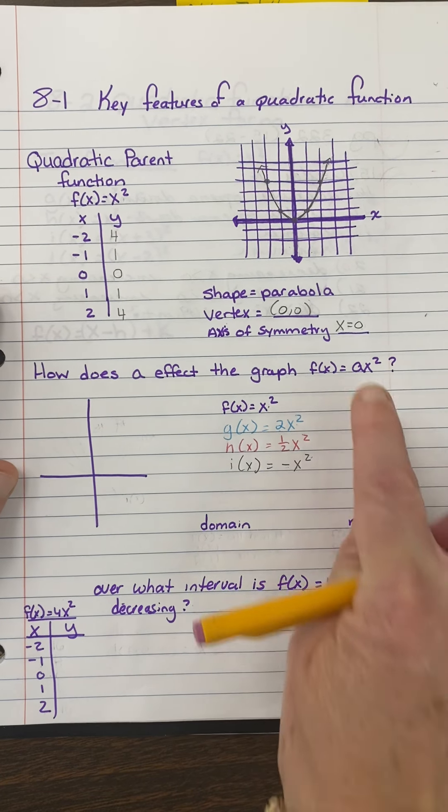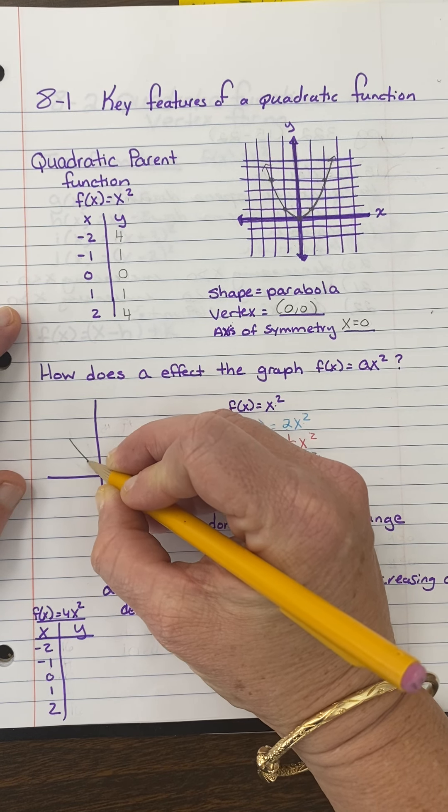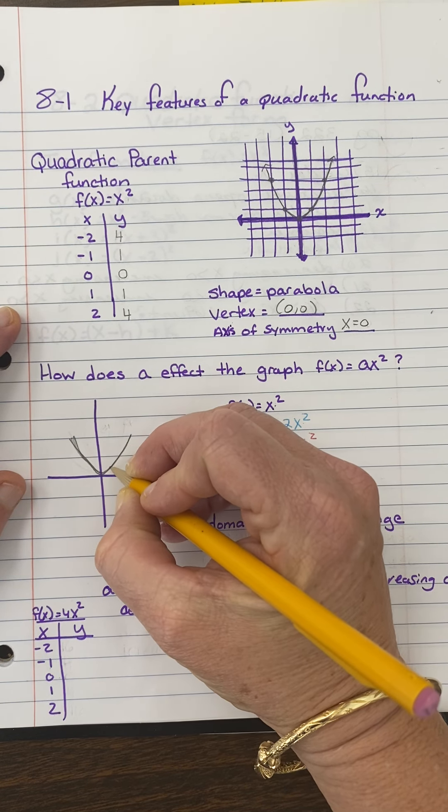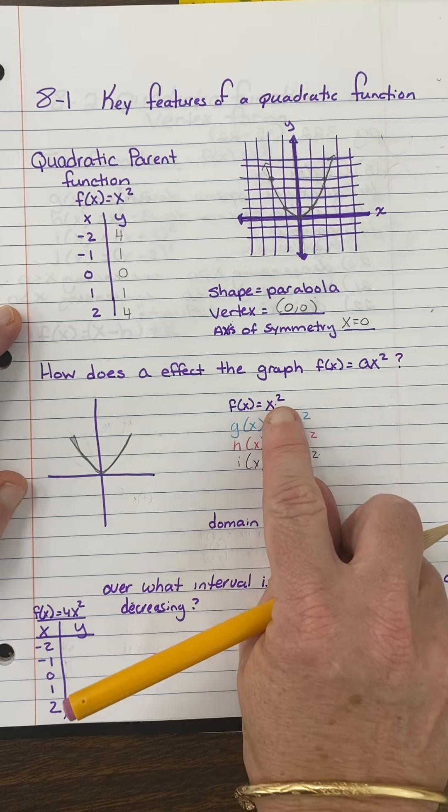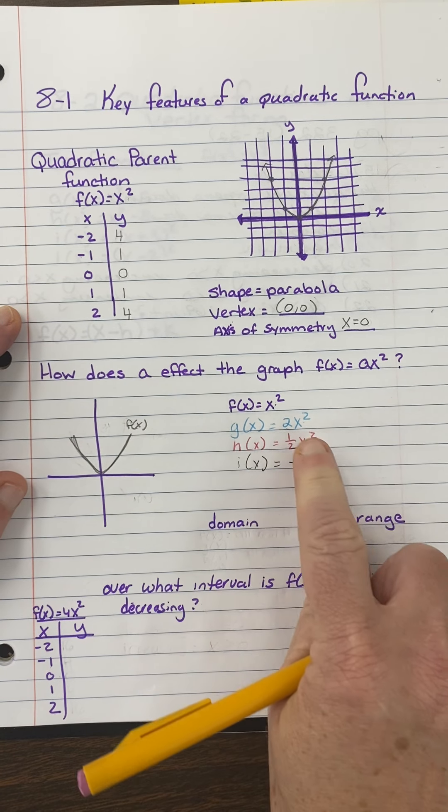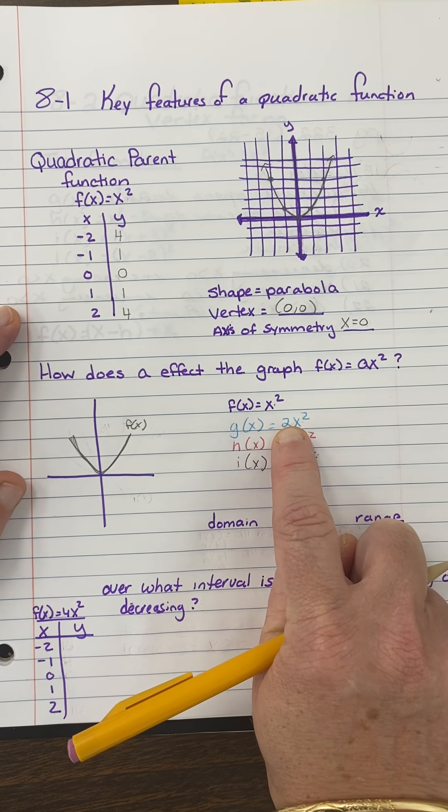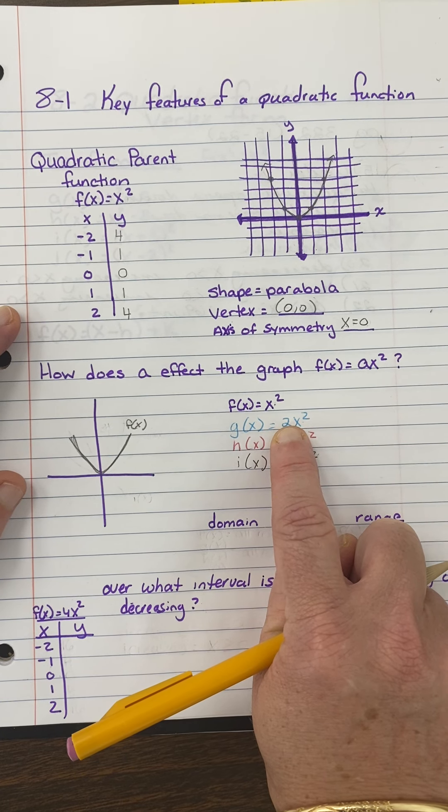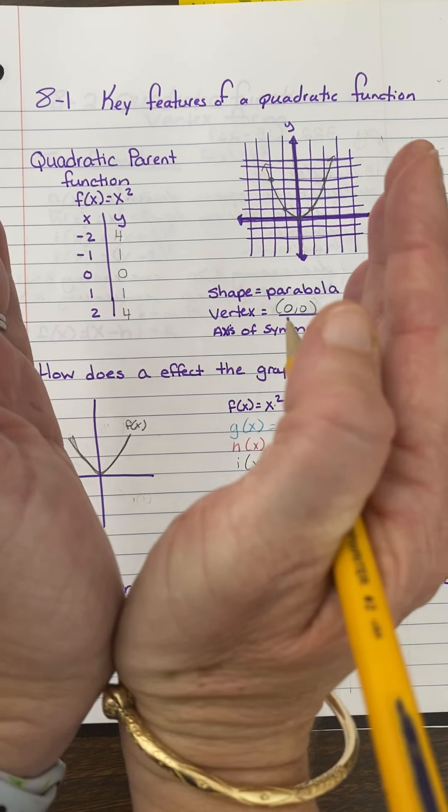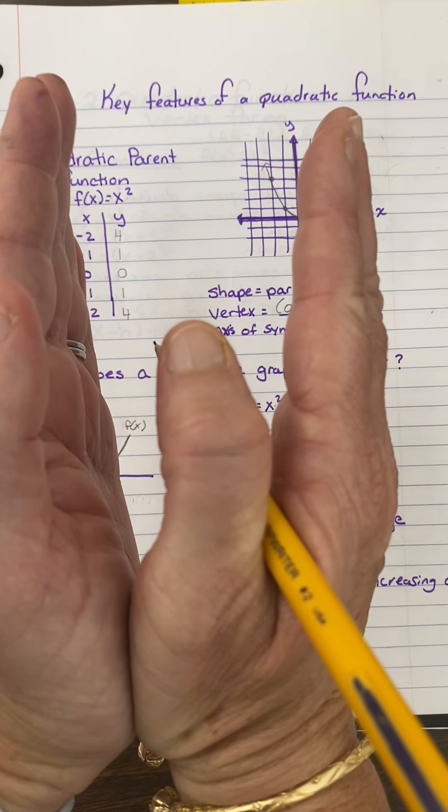So let's talk about how a affects the parent function. So if I just had to draw a small sketch right here, I would say this is the parent function. So if that's the parent function, that would be this one right here. That would be f of x. So I'm going to put a coefficient of 2. So if the value of a is 2, what's going to happen is, if this is the parent function, it's going to get skinnier. Just think of it like a bigger slope, right? It's steeper.